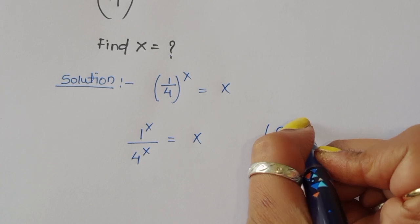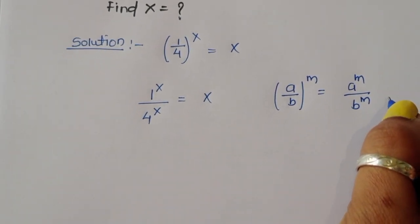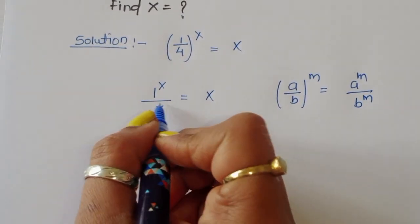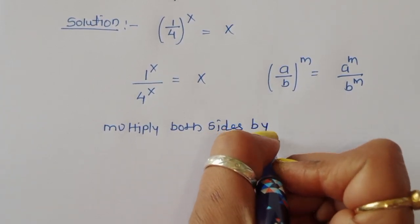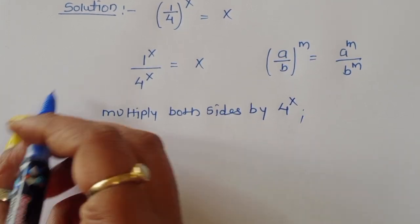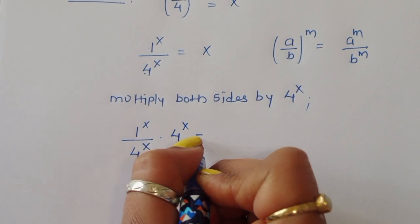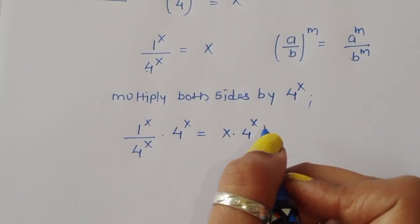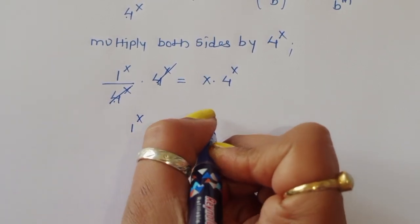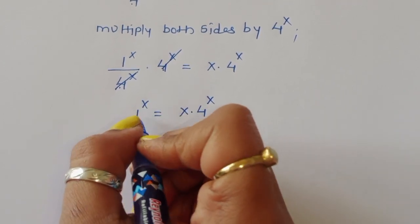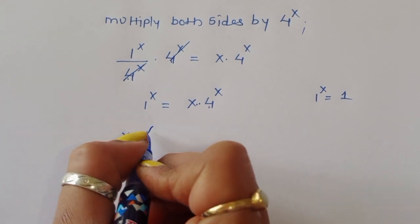Using the formula a/b raised to power m equals a^m divided by b^m. Now we can multiply both sides by 4^x to remove that term. After multiplying, the 4^x terms cancel, and we get 1/x = x times 4^x. Since 1/x equals 1, we can write x times 4^x is equal to 1. This is equation number 1.